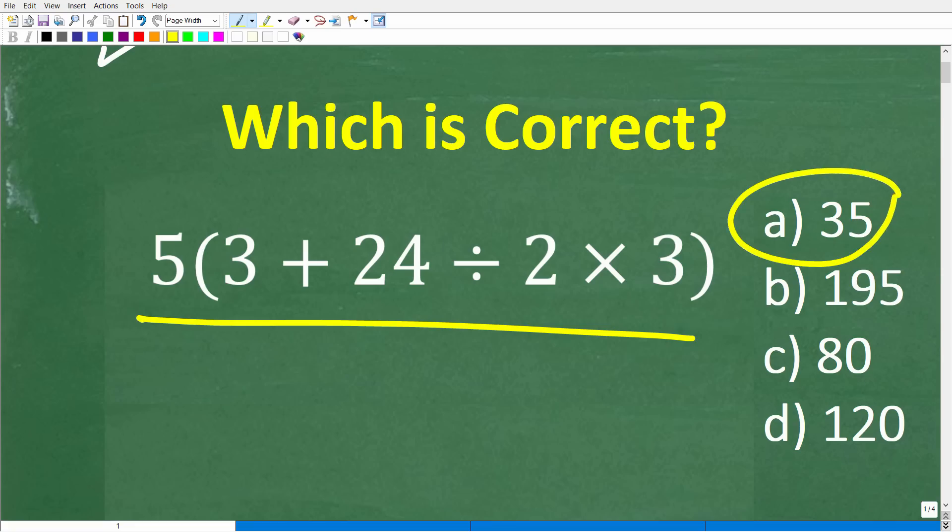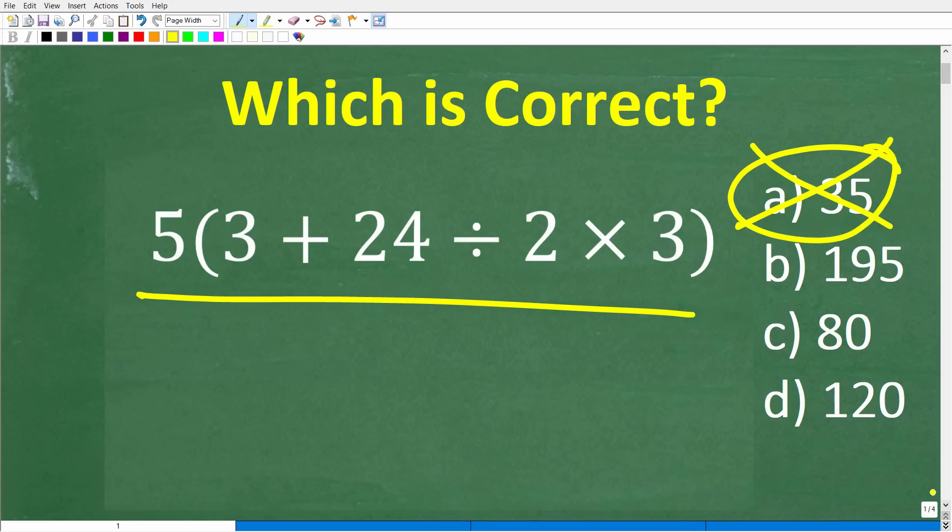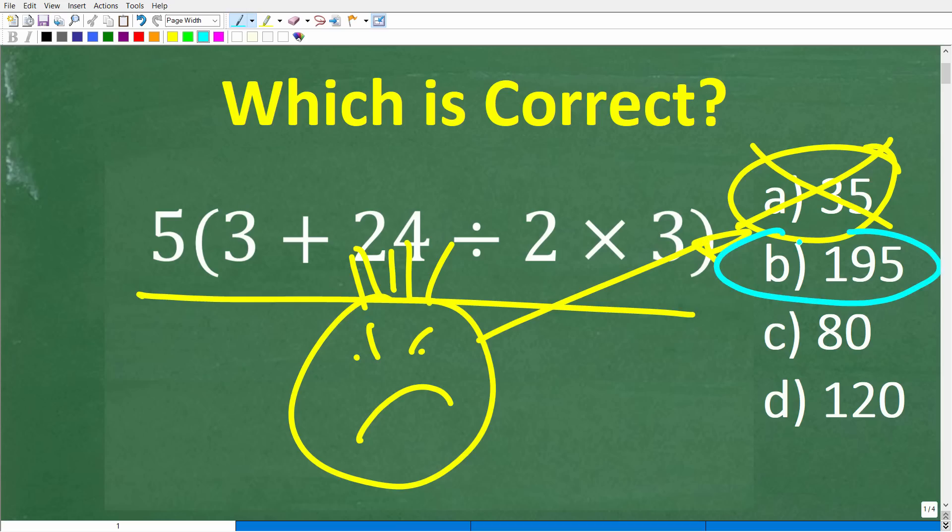The correct answer is not 35. Now, some of you might be saying, hey Mr. YouTube Math Man, stop playing with my emotions like that, because that's exactly what I got. I got 35. Well, 35 is probably the number one most common wrong answer. The correct answer is 195, which of course is B.